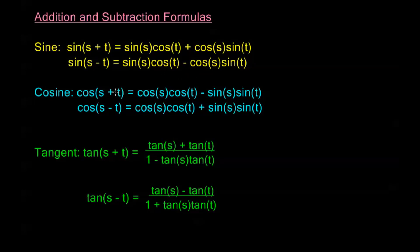For cosine it's a little bit different. We can still keep the variables in order. For cosine of s plus t or s minus t, we have cosine s cosine t at the beginning and sine s times sine t at the end, and the signs switch. If we're adding inside the argument of cosine, we're subtracting the two terms on the right. If we're subtracting in the argument, we're adding those two terms on the right.